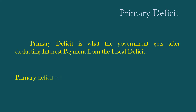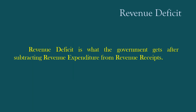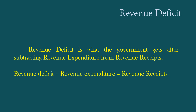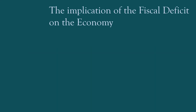Primary Deficit = Fiscal Deficit minus Interest Payment. Revenue Deficit is what the government gets after subtracting revenue receipts from revenue expenditure. Revenue Deficit = Revenue Expenditure minus Revenue Receipts. The Implications of Fiscal Deficit on the Economy: